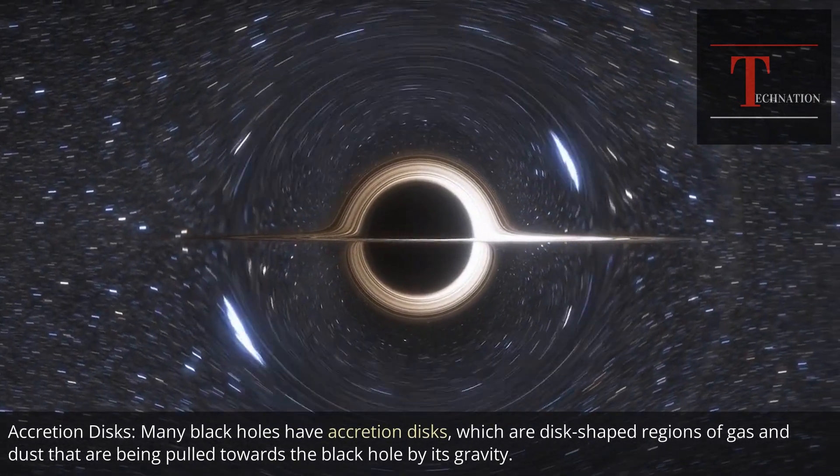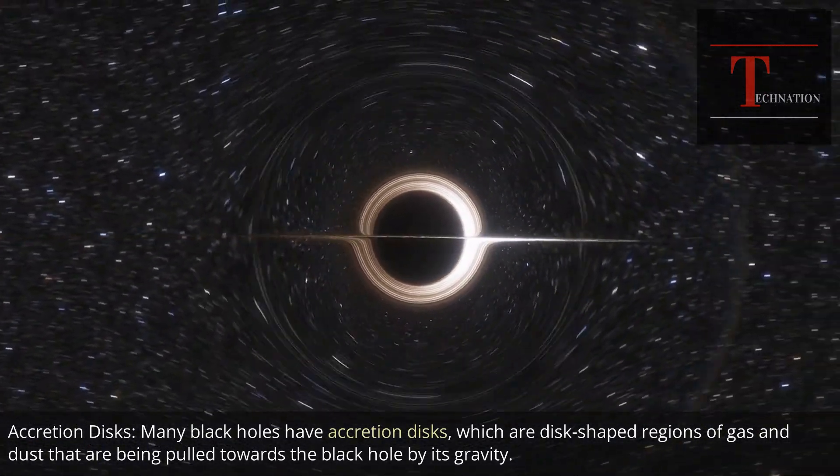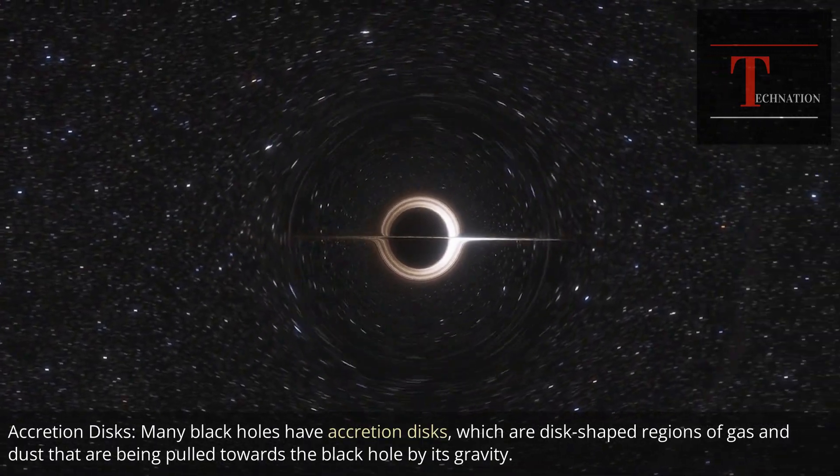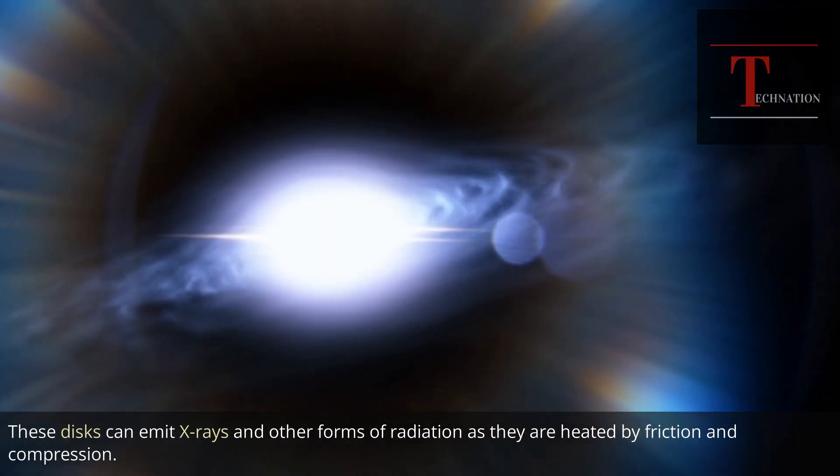Accretion disks: many black holes have accretion disks, which are disk-shaped regions of gas and dust that are being pulled towards the black hole by its gravity. These disks can emit x-rays and other forms of radiation as they are heated by friction and compression.